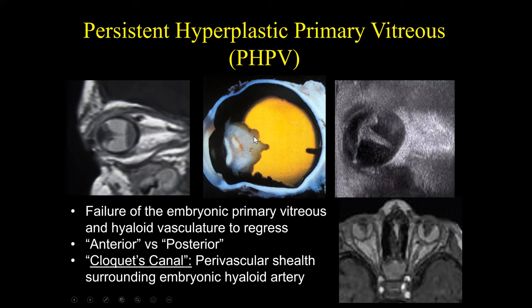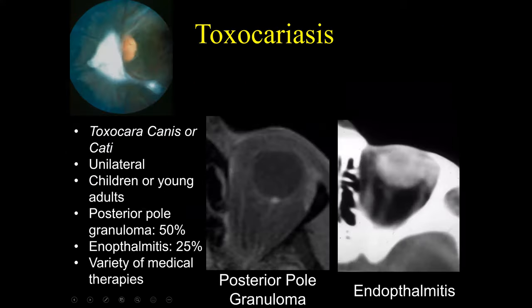PHPV can occur anterior and posterior. These are examples of persistent hyperplastic primary vitreous involving the anterior portion of the globe.